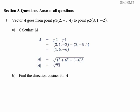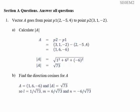Part B. Find the direction cosines for A. The direction cosines are the I value over the length, the J value over the length, and the K value over the length. So we're going to get L is equal to 1 over root 73, M is equal to 6 over root 73, and N is equal to minus 6 over root 73.